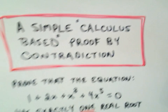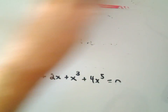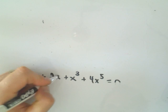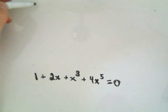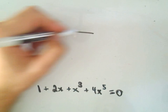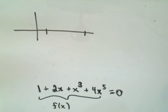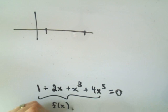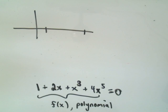Let's look at our original equation again. The first thing I'm going to do is show that at least one root exists, and I'm going to use the Intermediate Value Theorem to do that. The IVT says, basically, if you have a continuous function — and I'm going to let f(x) = 1 + 2x + x³ + 4x⁵ — the idea is, if you can show the function is negative at one point and positive at another, a continuous function has to cross the x-axis.